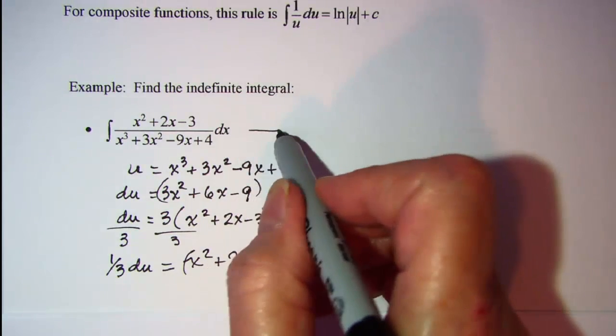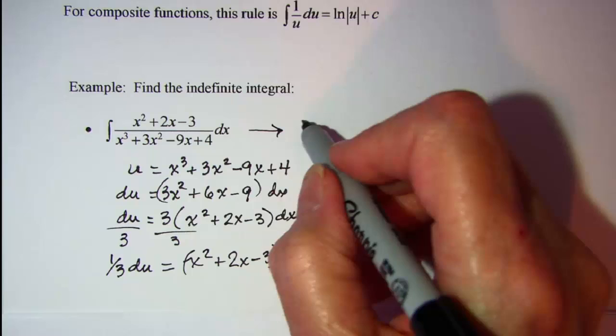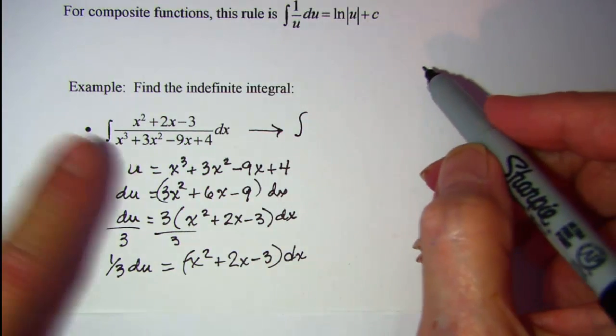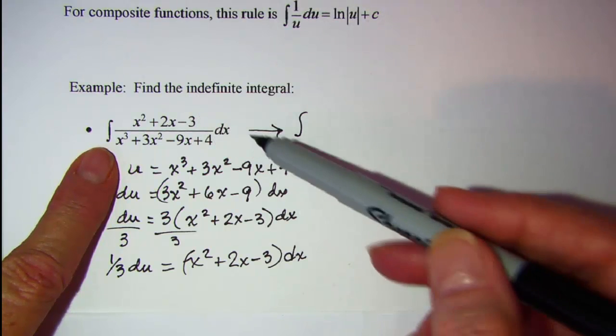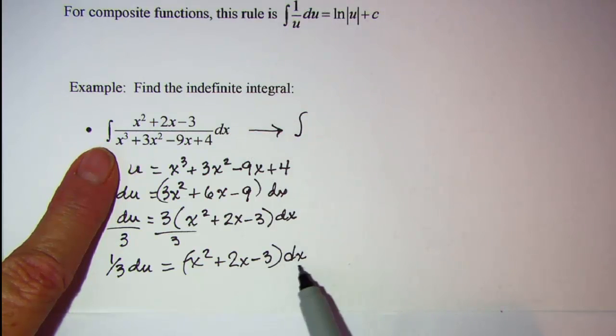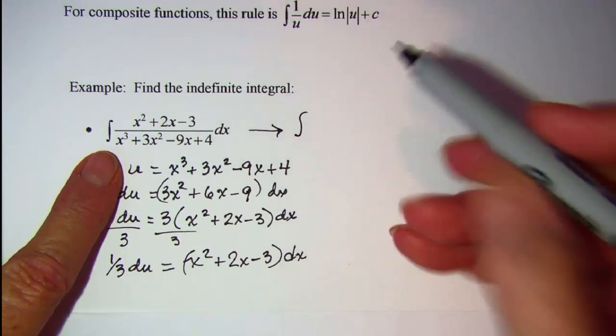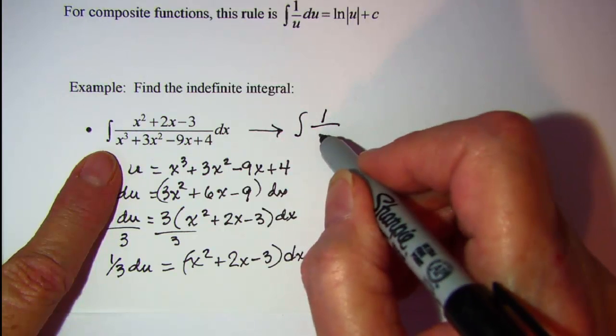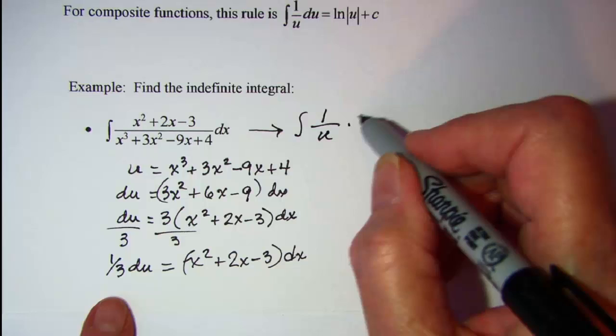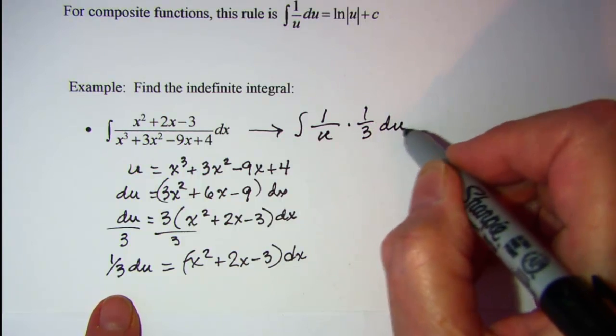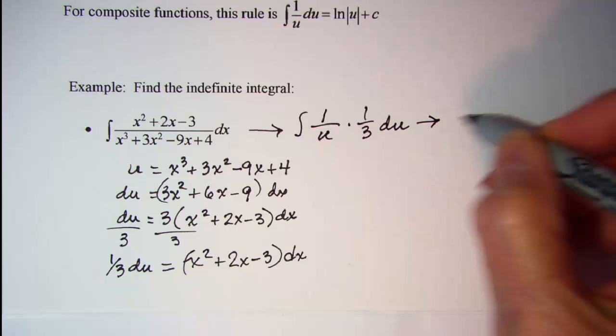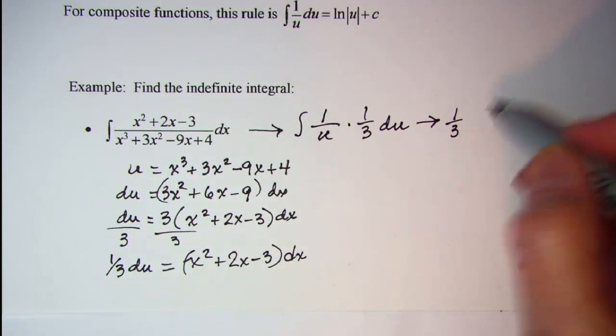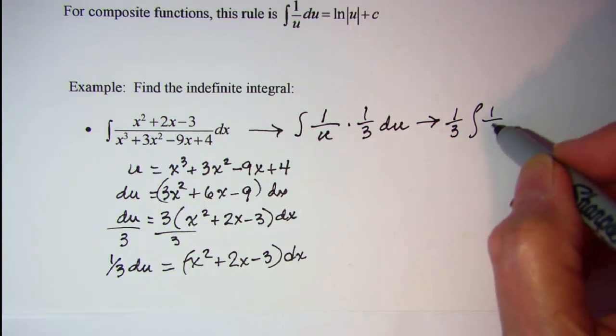Now I can rewrite this problem. We have the integral: the x squared plus 2x minus 3 multiplied by dx, which I'll replace with 1/3 du, and the denominator is u. So I have 1 over u times 1/3 du. My 1/3 can come out in front, so I have 1/3 times the integral of 1 over u du.